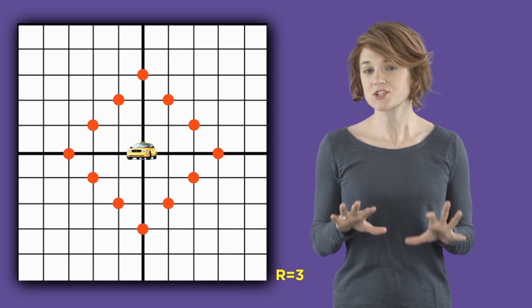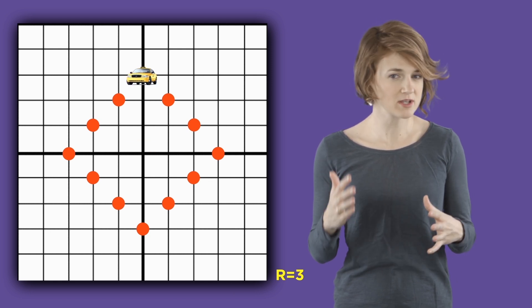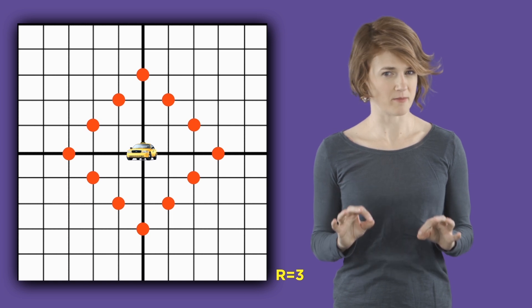For starters, we have these 12 points. Because a taxi can reach these points by driving three blocks without backtracking, they're all distance 3 from the origin.